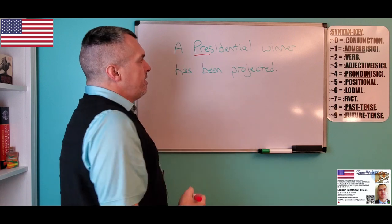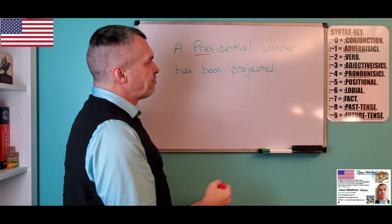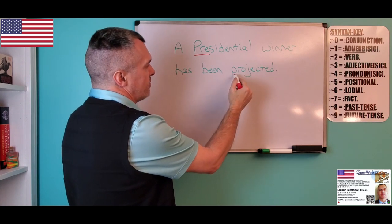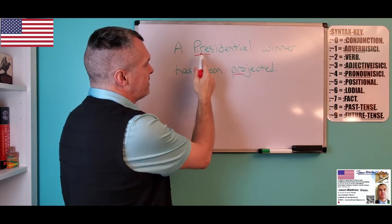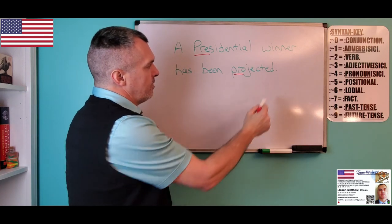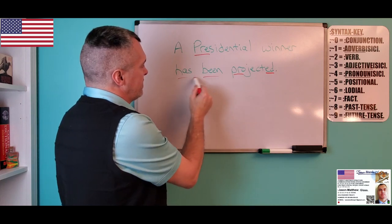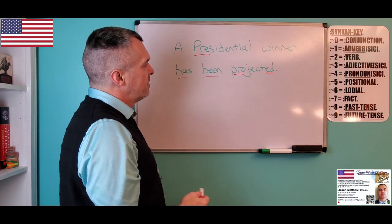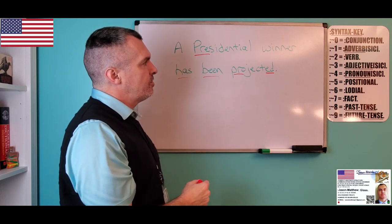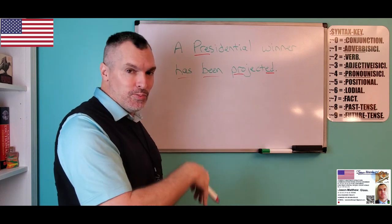We see PRE negates the now space — it means no. Then 'has been projected': PRO means the same as PRE and negates the now space, it means no. ED is past tense, 'been' is past tense, 'has' is past tense. So this is all happening in the past and in the future — it's happening any place but right now.